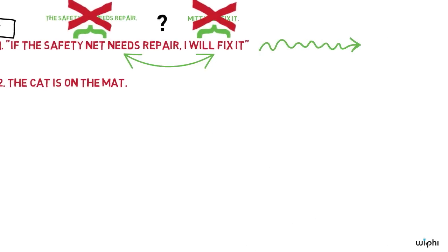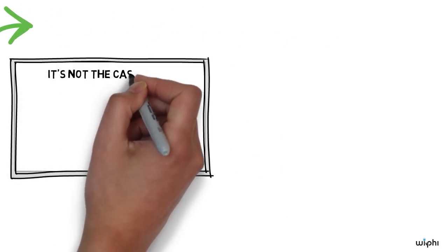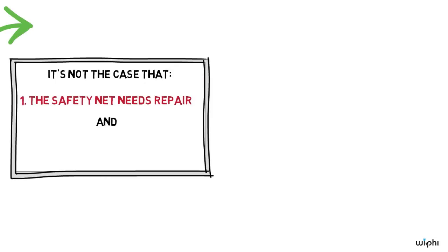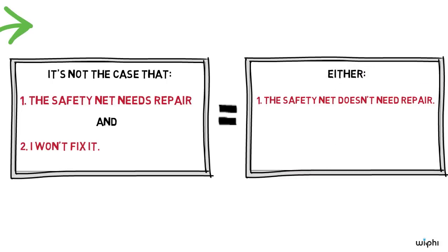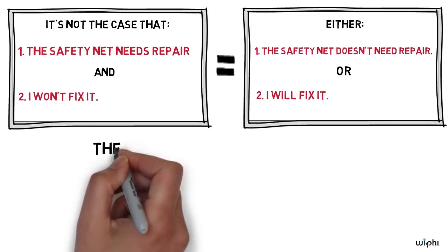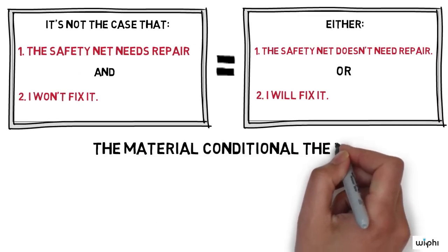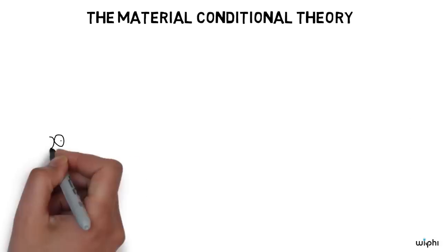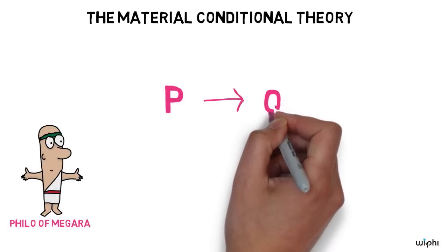Here's a simple answer. By saying the sentence, Romney has told us that it is not the case that the safety net needs repair and he won't fix it. Equivalently, he said that either the safety net doesn't need repair, or that he will fix it. Let's call this theory the material conditional theory. Philosophers, at least as far back as the Hellenistic philosopher Philo of Megara, have been attracted to this theory about what conditionals mean.